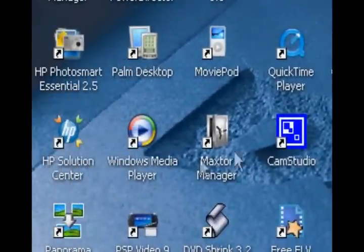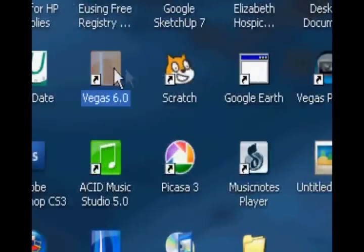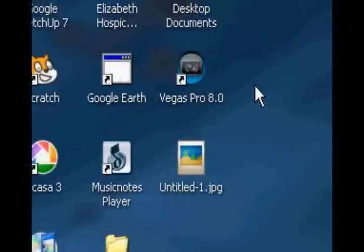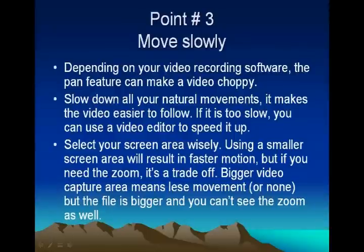If you're coming over here, you want to scroll and keep it all nice and slow so people can see what you're doing. You can use programs to change the speed of your mouse if you're really high-tech, but mainly just take your time and go slowly — it will make your video better. Don't rush. Depending on your video recording software, the pan feature can make the video very choppy. Slow down your natural movements — it makes the video easier to follow. If it's too slow, you can use a video editor to speed it up or vice versa. Select your screen area wisely: using a smaller screen area will speed up your video and make it choppier, but it gives you better zoom. A bigger area will make less movement but the file is bigger and you can't see as zoomed in.